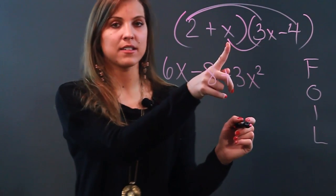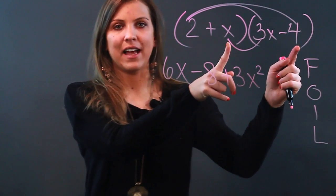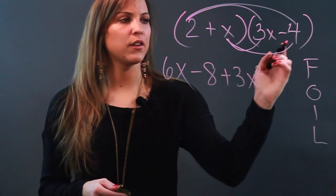And now last, I'm doing the last term in this parentheses and the last term in this parentheses. So I get x times negative 4, which is negative 4x.